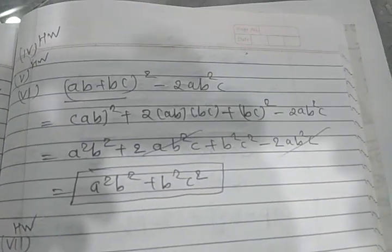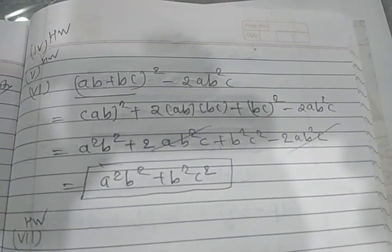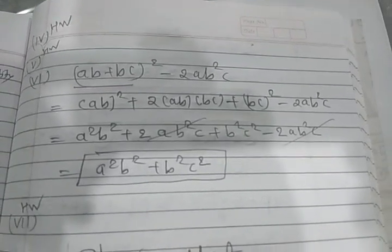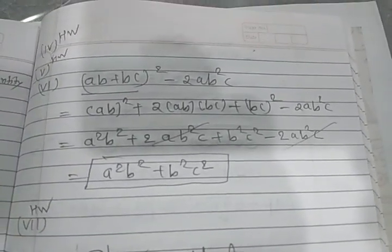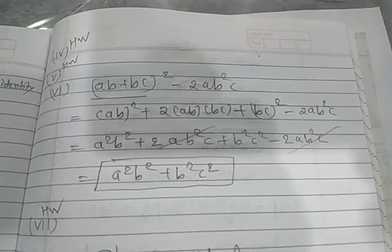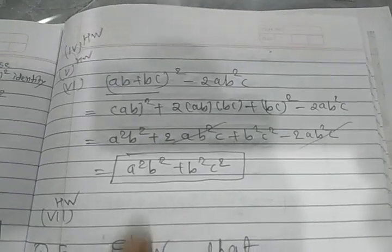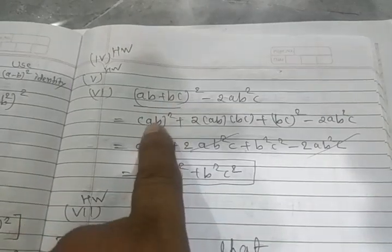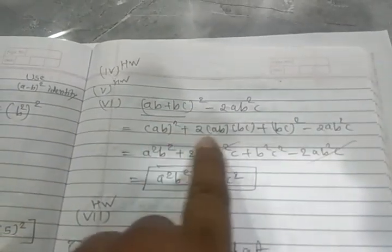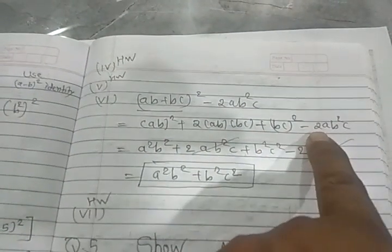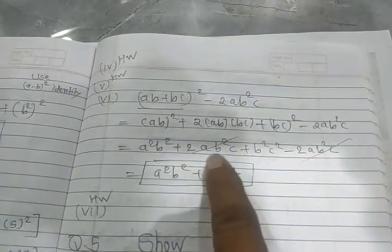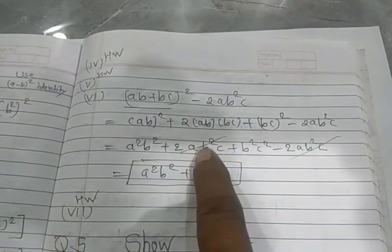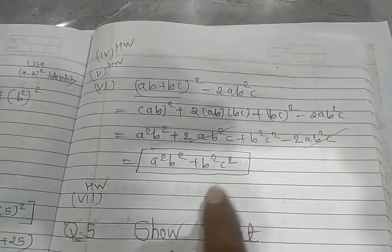Okay students, continuing with problems four and five. Homework: sixth one, ab plus bc whole square minus two ab square c. So first of all you have to simplify this first, a plus b whole square according to here. I am simplifying this, it will be the same, so these terms will be gone and you will get this answer.